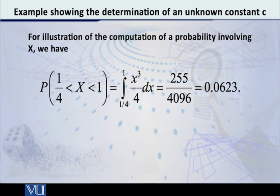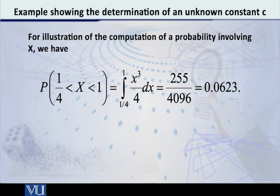That is x lying between 1/4 and 1. To compute this probability, all we have to do is take the integral of the PDF — x³ over 4, or (1/4)x³ — from 1/4 to 1. The calculations are very straightforward and the final answer comes out to be 0.0623.